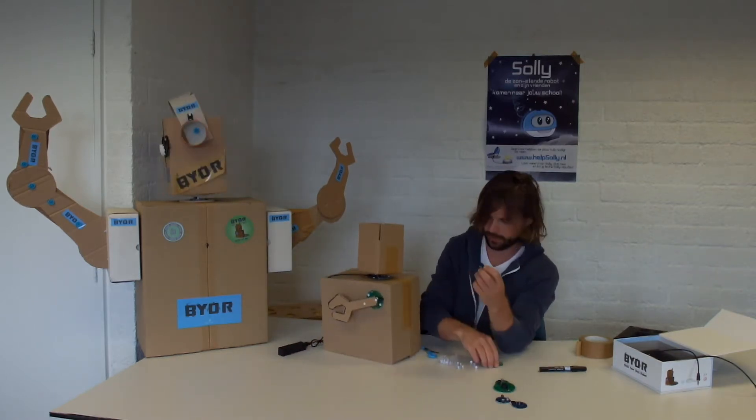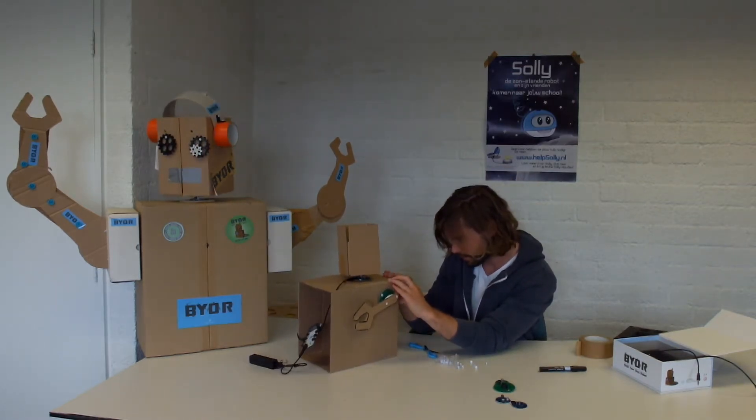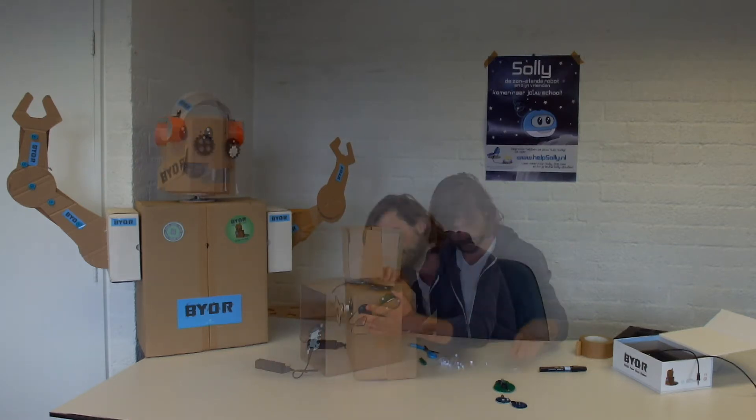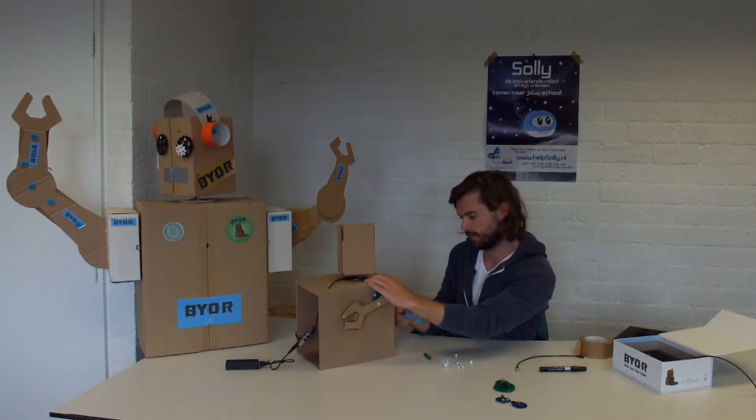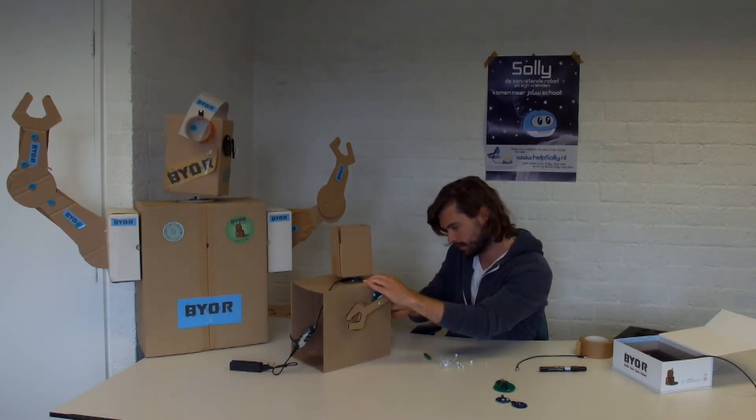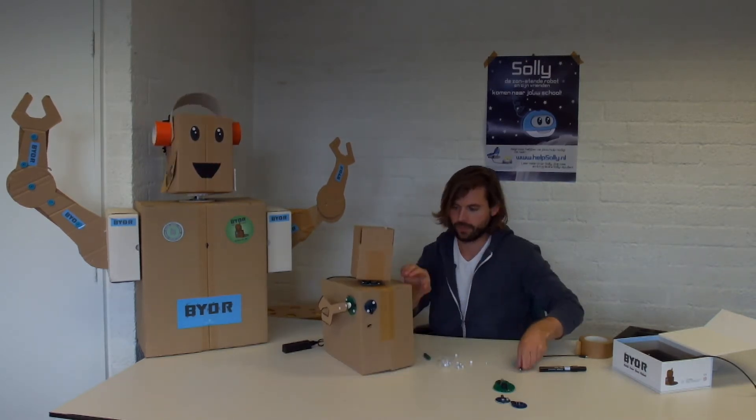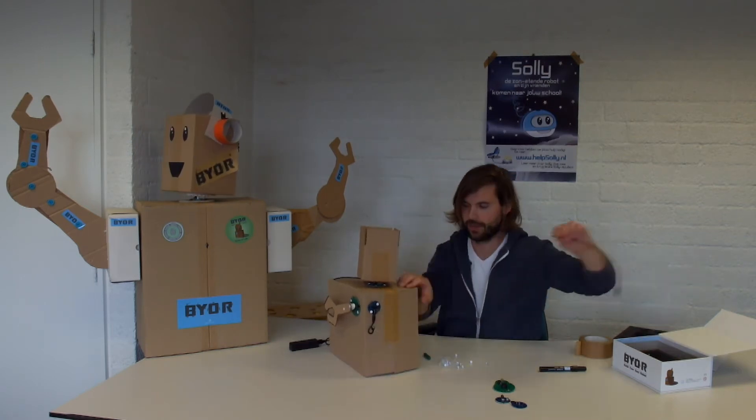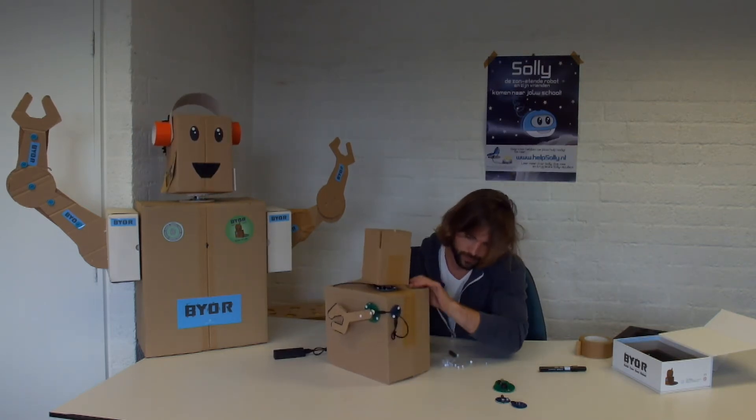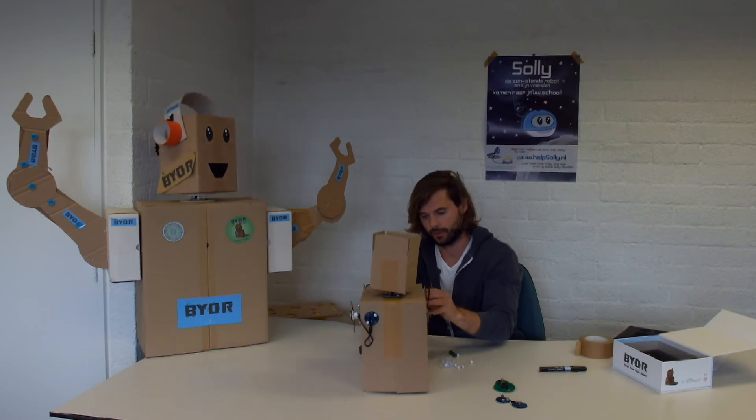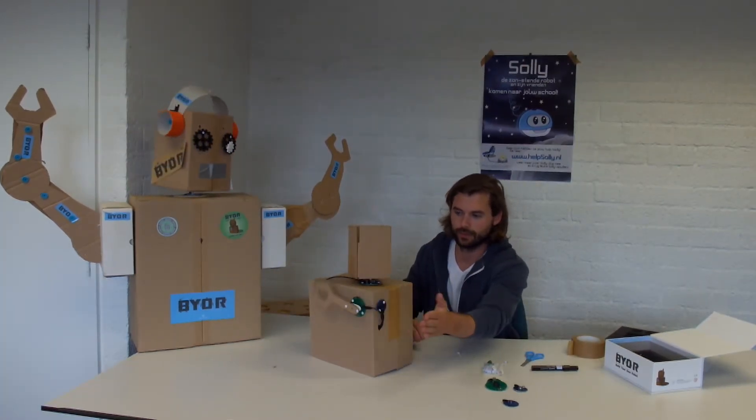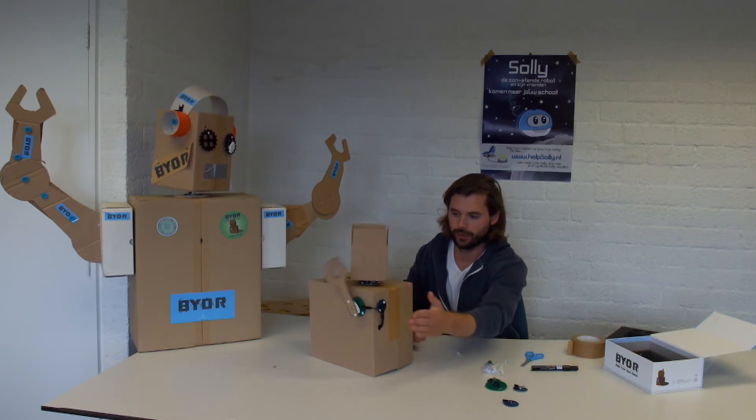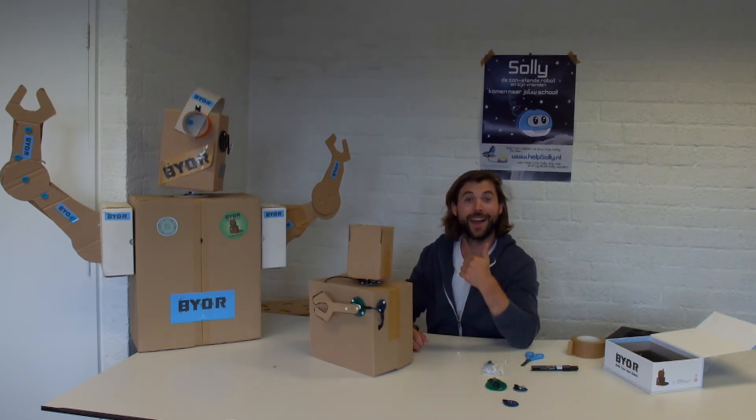Next I'm going to secure the distance sensor to the front of the body. Again this is done with the puncture pen and the split pens. Then I'm going to connect all the components to the motherboard. In this case it's really handy to make a hole in the front of the robot. This way the cables can go through that hole and easily reach the motherboard. And there we go, the second functionality of your robot is also done. Great!